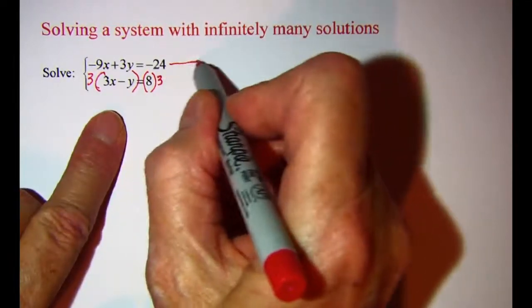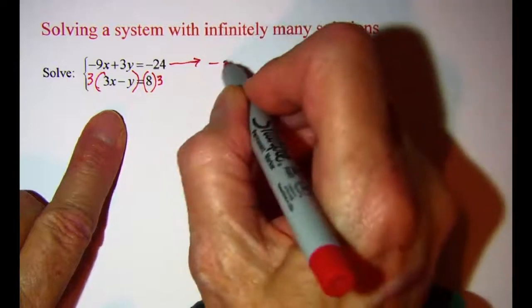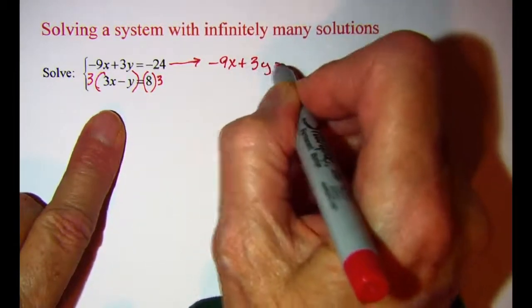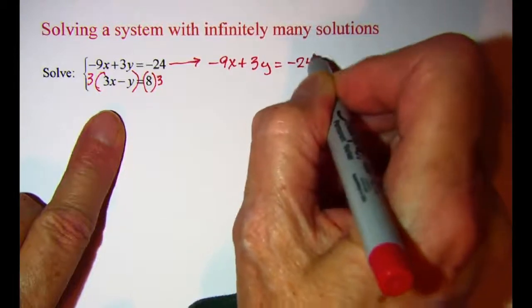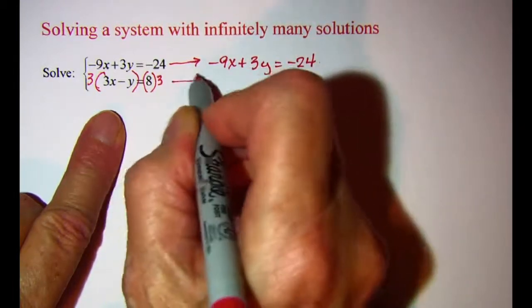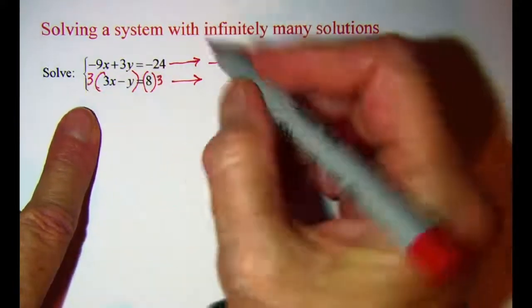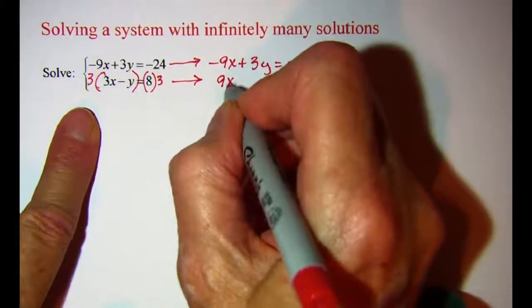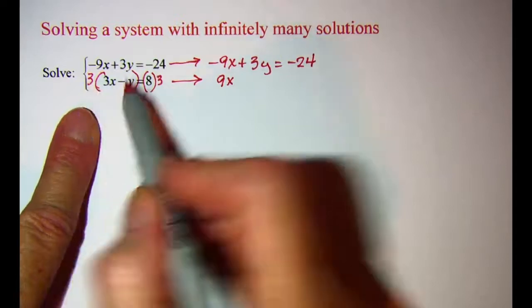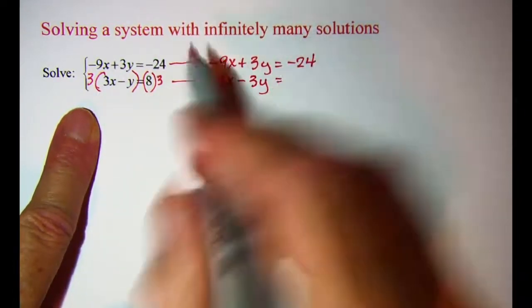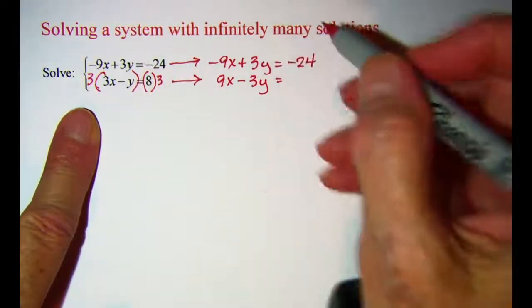So let me copy my first equation, negative 9x plus 3y equals negative 24, and then multiply through on this equation. 3 times 3x is 9x, 3 times negative y is negative 3y, and then 3 times 8 is 24.